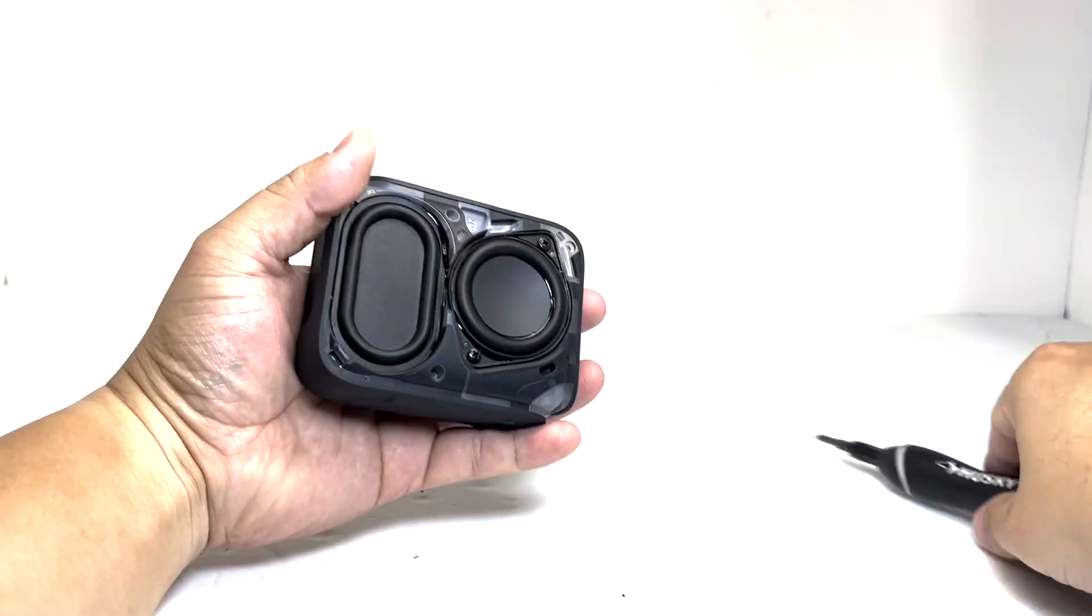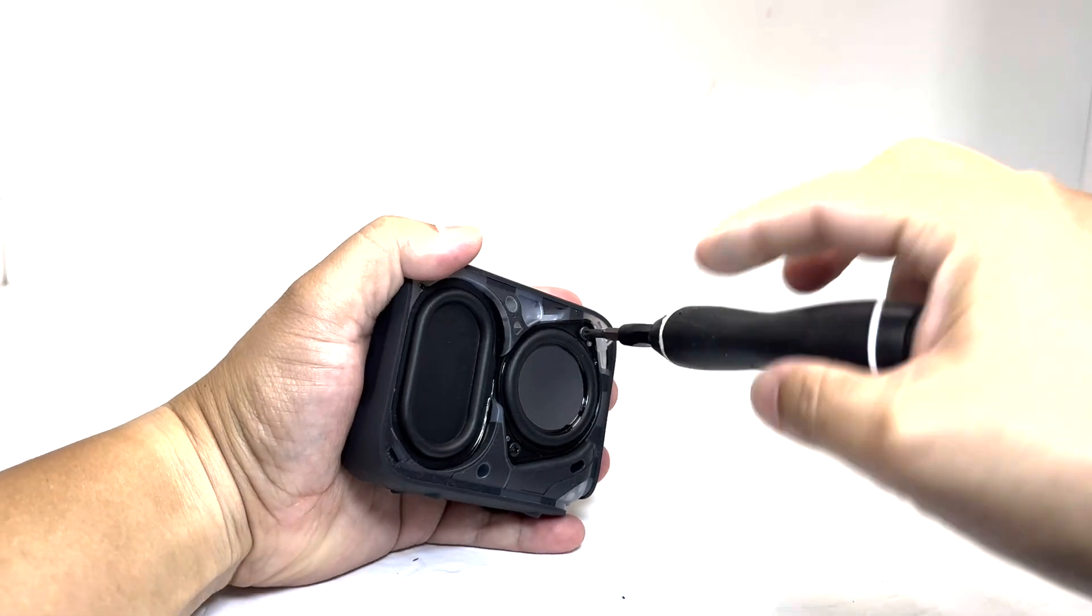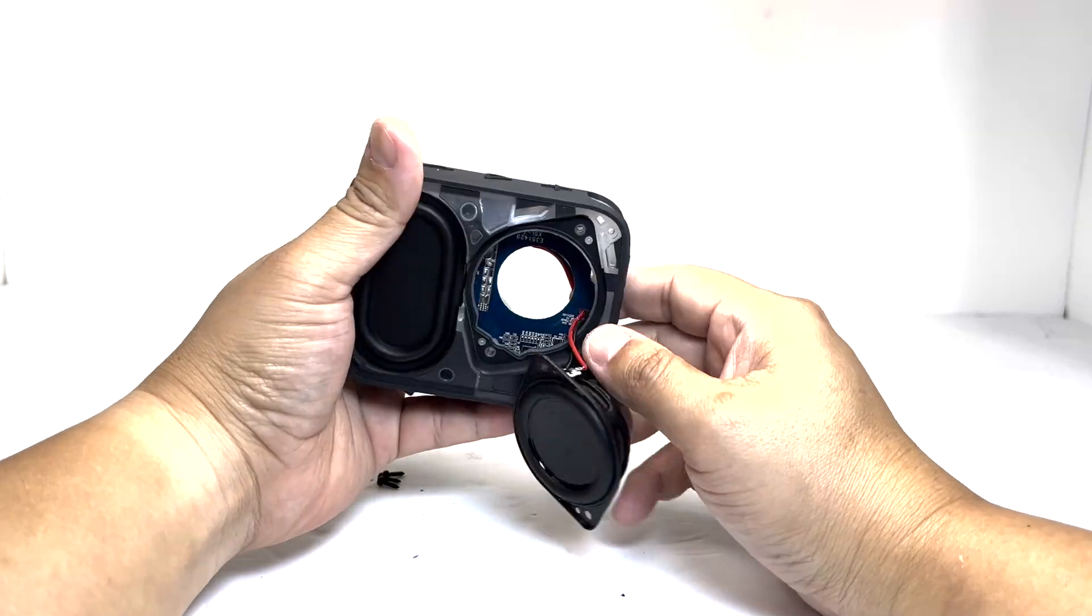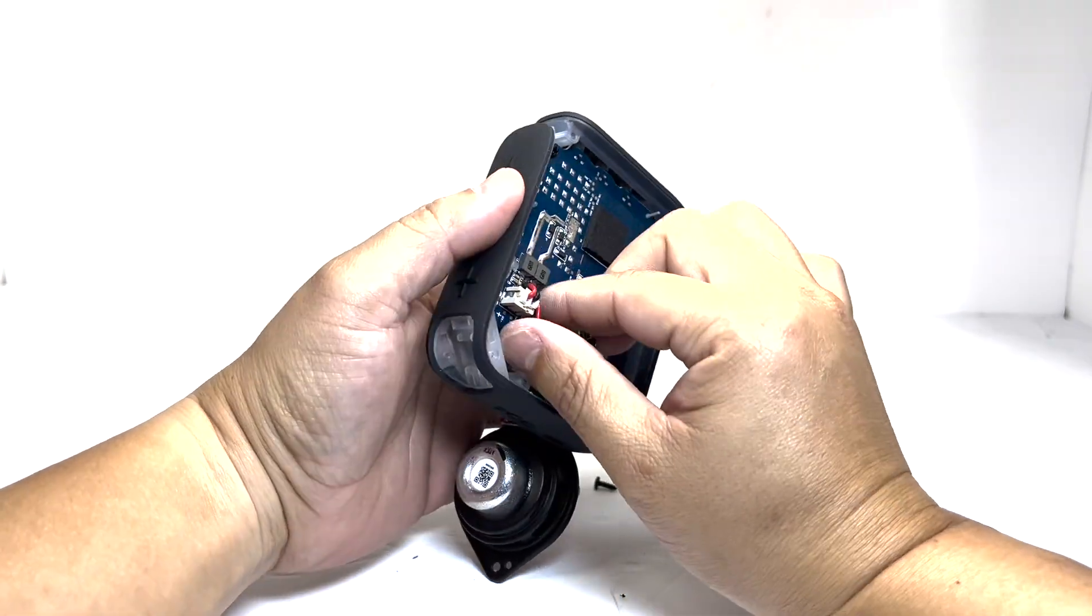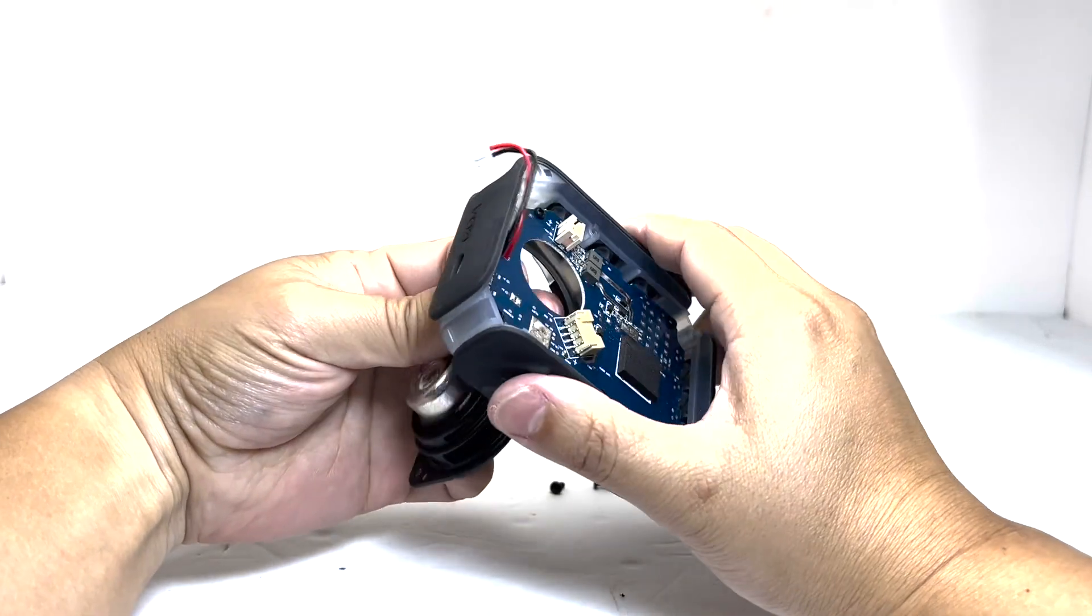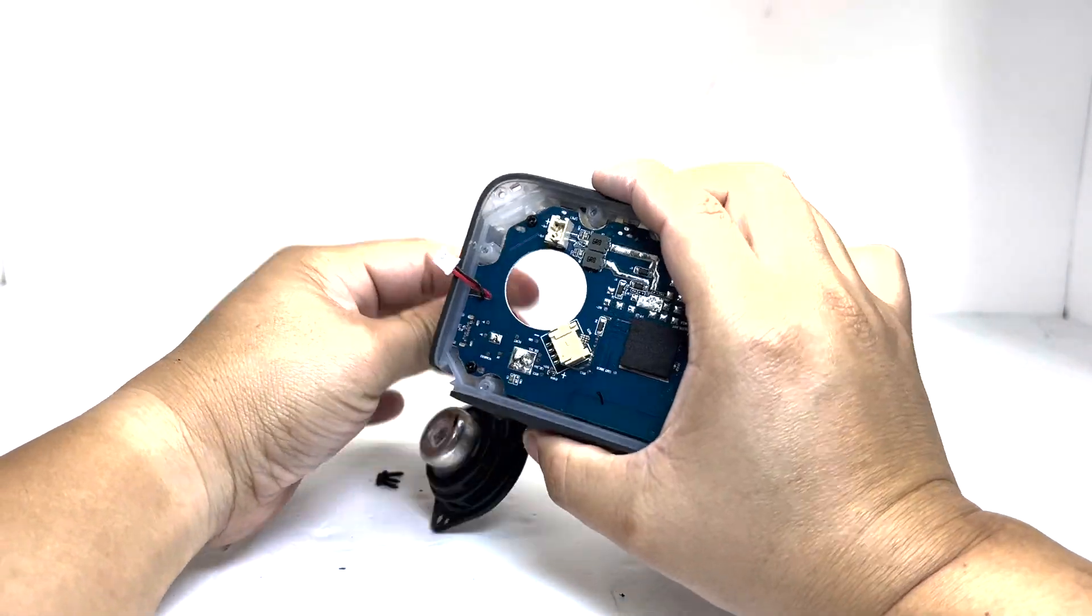Now let's move to the front and remove two screws to release the driver and detach the cable from the motherboard. To completely remove the driver, we will also need to take off the motherboard. We will do so by taking off four screws.